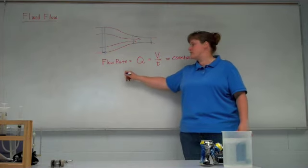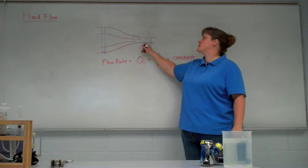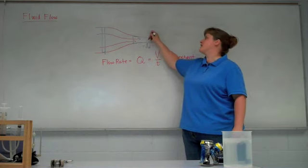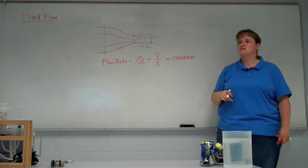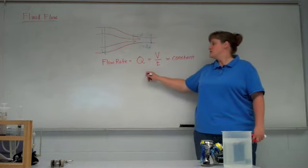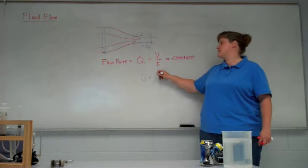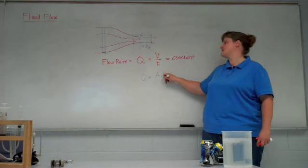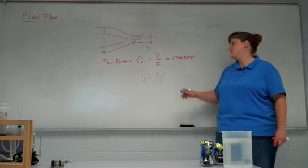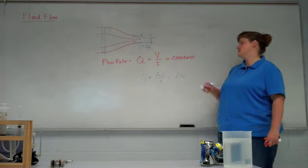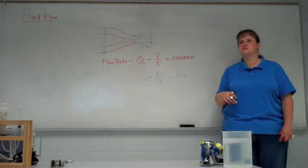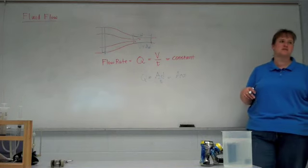So we can write this a different way. Volume, like we said before, the volume is the cross-sectional area times however long that is. So flow rate Q can also be written as area times distance over time. But distance over time is velocity, or speed in this case. We aren't as concerned with the direction.